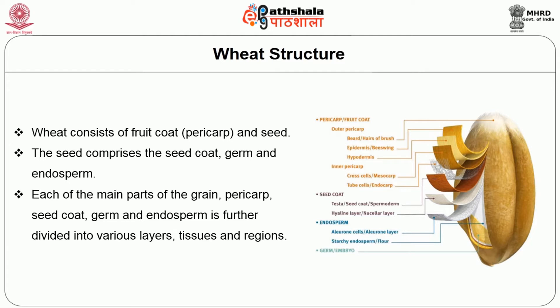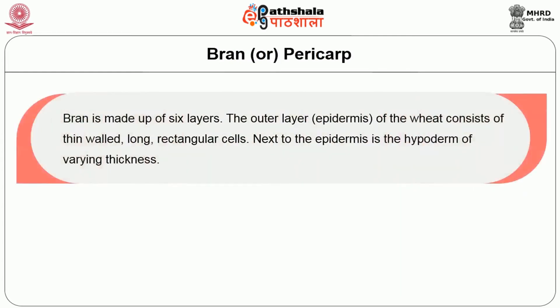Wheat consists of fruit coat, pericarp and seed. The seed comprises the seed coat, germ and the endosperm. Each of the main parts of the grain — pericarp, seed coat, germ and endosperm — is divided further into various layers, tissues and regions.